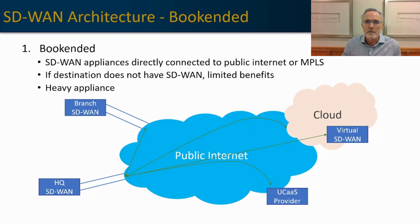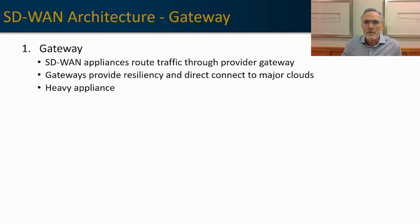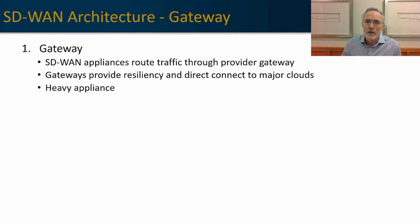The second architecture is the gateway architecture. SD-WAN appliances are placed everywhere, but in this design they connect directly to the provider gateway. These gateways have significant advantages. Number one, they provide resiliency for your application — if you were on a UCaaS voice-over-IP session and the internet connection you were using went down, the gateway would maintain that UCaaS session, transfer the traffic to the surviving link, and allow that call to continue uninterrupted. Gateway providers also generally have direct connections into the major cloud providers, so traffic can be accelerated into AWS, Azure, and GCP — similar to an MPLS environment — offering good quality of service advantages.